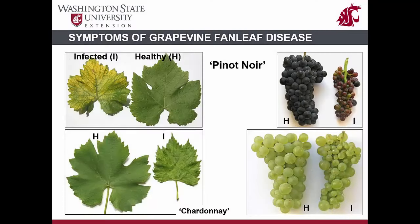Grapevine fan leaf disease usually appears in patches in the field and infected vines are smaller than normal. Typically, leaf symptoms include severe distortion, bright chlorosis or yellowing of leaves, closely spaced veins, and widely spaced leaf margins leading to the shape of a fan — hence the disease is called fan leaf disease. Fan leaf symptoms can be seen in both red and white-fruited cultivars.